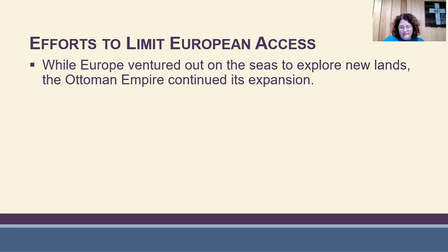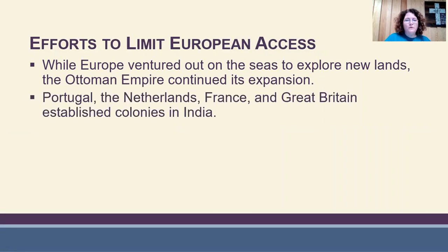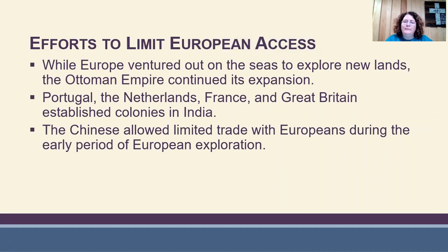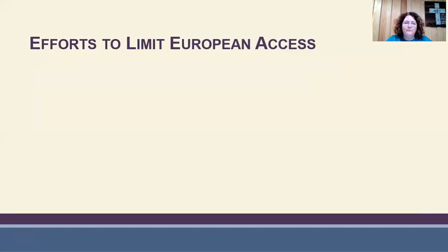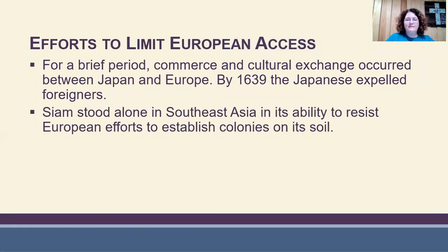As the Europeans explored other continents, they interacted and sometimes collided with other civilizations. Responses to European exploration varied from one area to another. While the Europeans ventured out on the seas, the Ottoman Empire continued its expansion. Portugal, the Netherlands, France, and Great Britain established colonies in India. The Chinese allowed limited trade with Europeans during the early period of exploration. For a brief period, commerce and cultural exchange occurred between Japan and Europe, but by 1639 the Japanese expelled foreigners. Siam stood alone in Southeast Asia in its ability to resist European efforts to establish colonies on its soil.